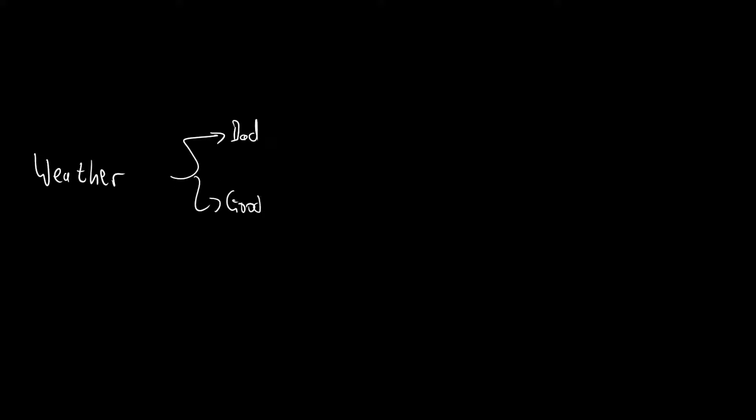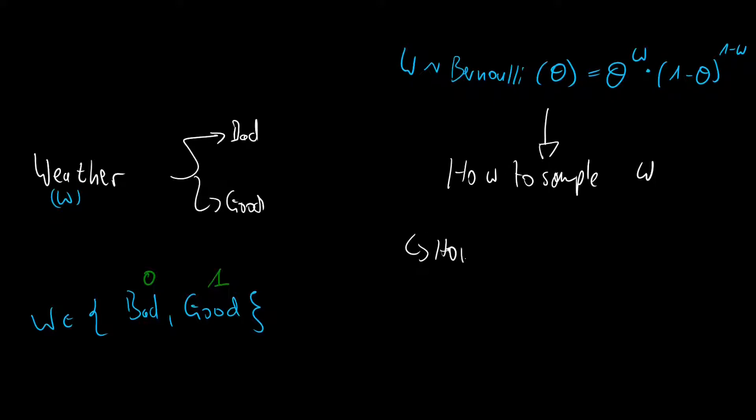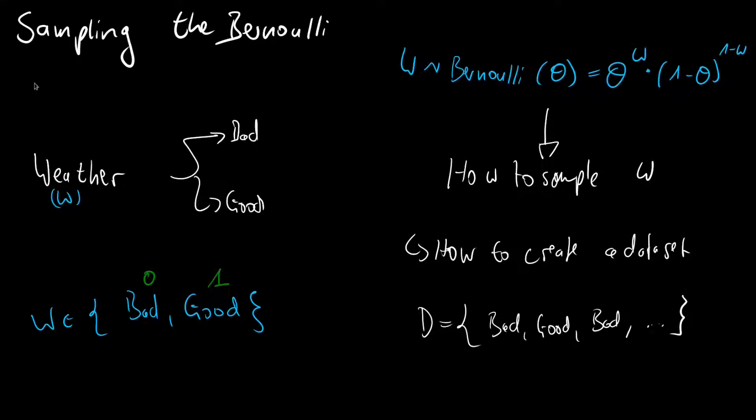You are modeling the weather to either be bad or good. You call this W, then the weather can be bad or good. You can code this with numbers, and you see it's a Bernoulli distribution with a certain parameter theta. You know the probability mass function, but how do you sample it? How do you create a data set with bad and good weather? Welcome to this video, where we're going to sample the Bernoulli distribution.